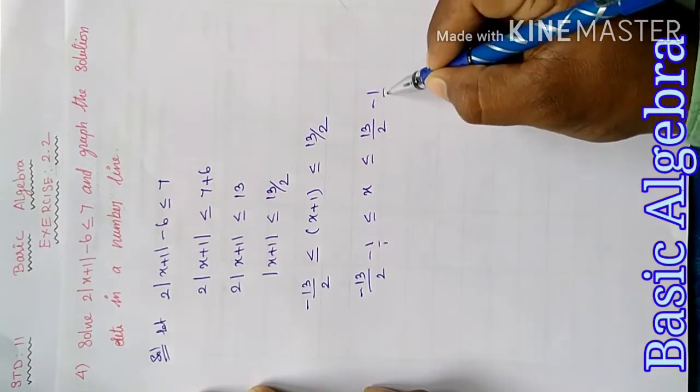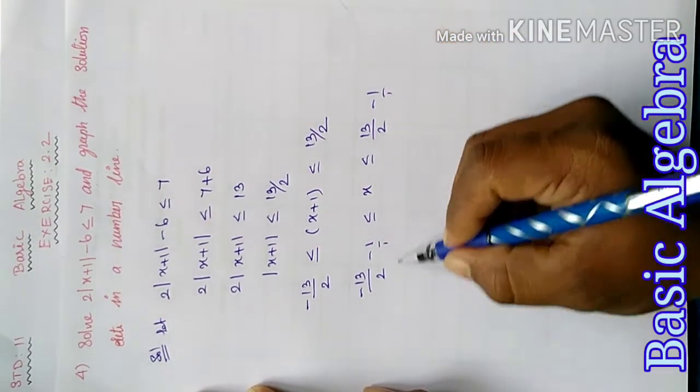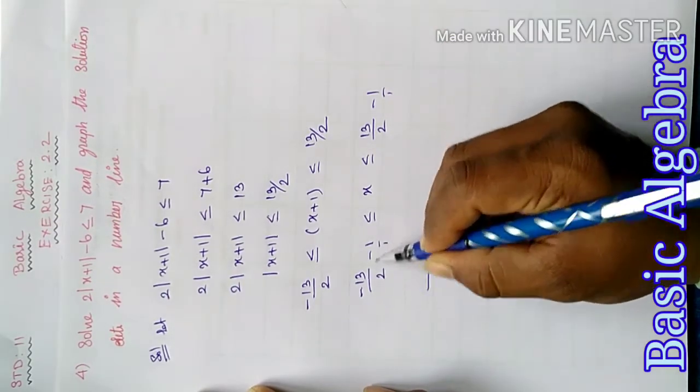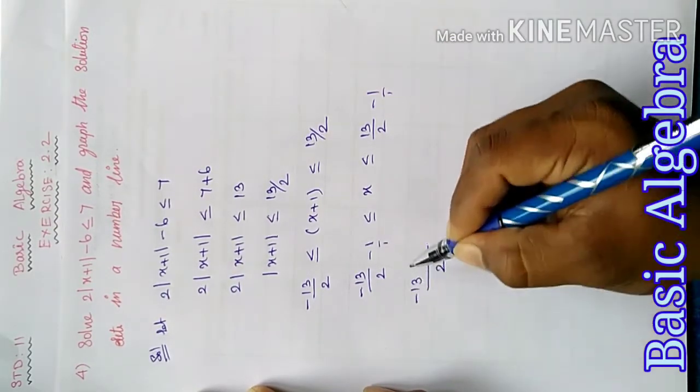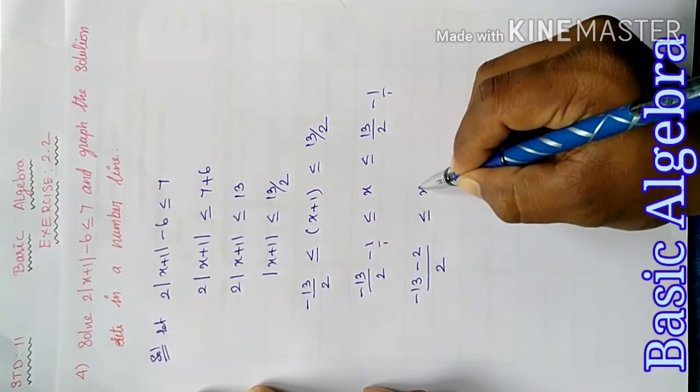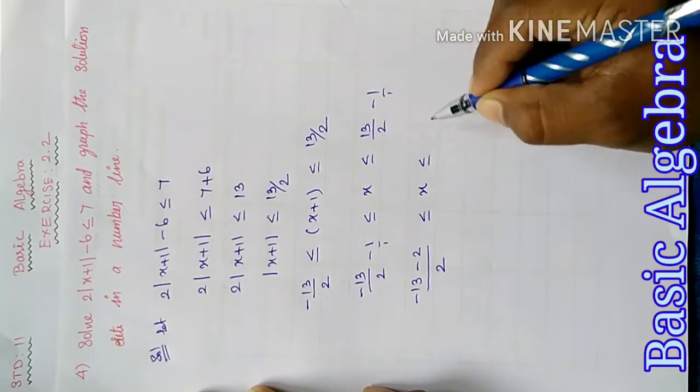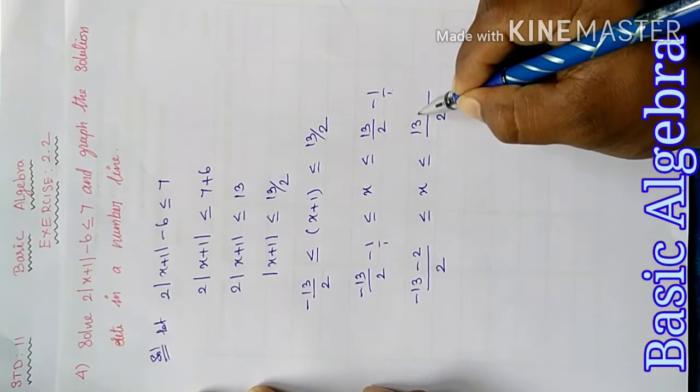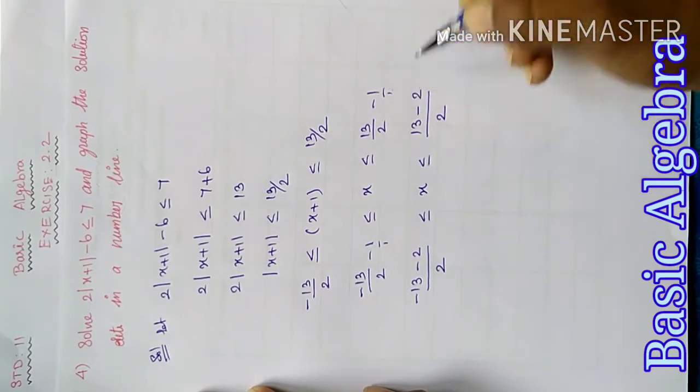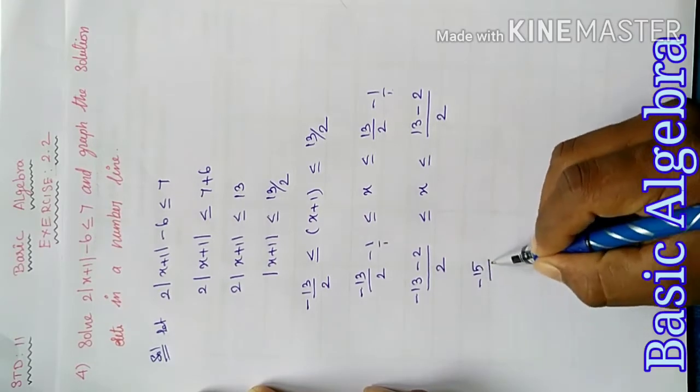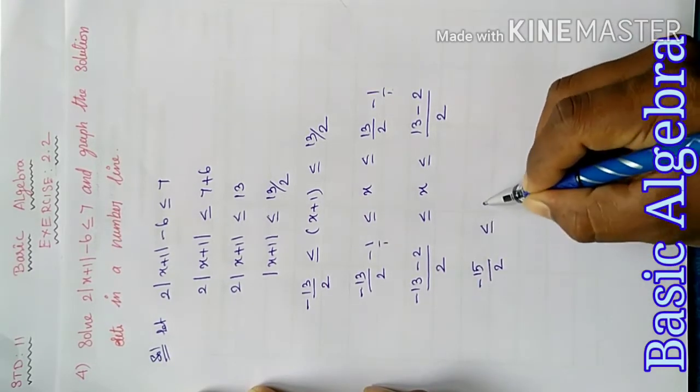Subtracting 1 from all parts: minus 13 divided by 2 minus 2, less than or equal to x, less than or equal to 13 minus 2. Cross multiplying, minus 13 minus 2 is minus 15 by 2, less than or equal to x, less than or equal to 11 by 2.